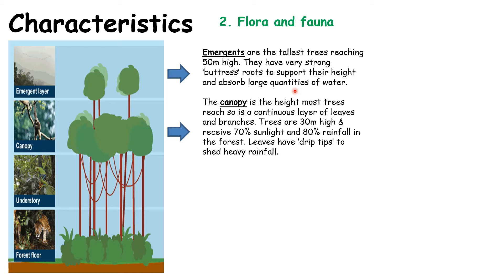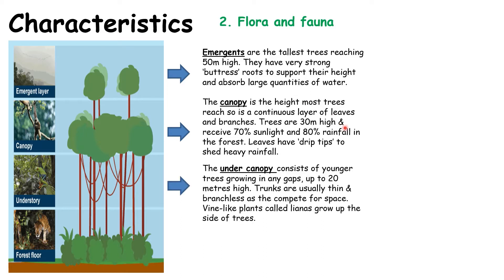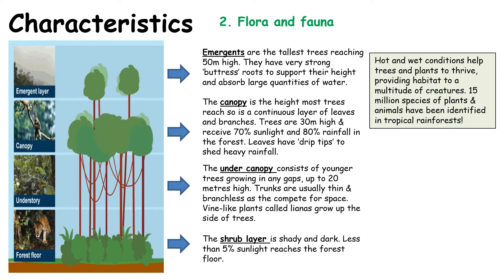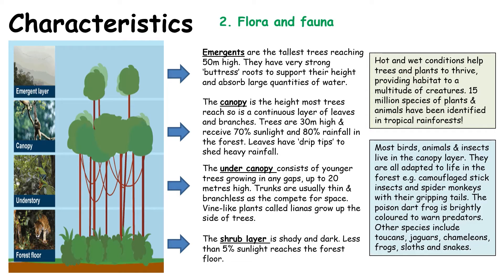80% of the rainfall hits the canopy layer, which means the layers underneath are quite dark — such as the under canopy, which is the younger trees growing up to the height of the canopy, and also the shrub layer. In the shrub layer, it is so dark due to the shade from branches above that only 5% of sunlight reaches it. Hot and wet conditions help these trees and plants to thrive, and 15 million species of plants and animals have been identified within our rainforests. Most birds, animals and insects live in the canopy layer, and most creatures are perfectly adapted for rainforest life, such as stick insects mimicking sticks and spider monkeys that use their gripping tails to swing from branch to branch.